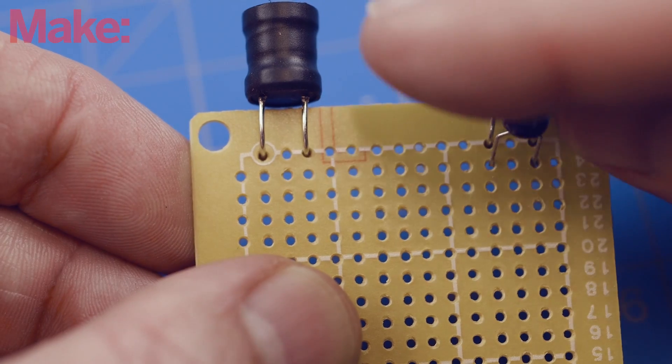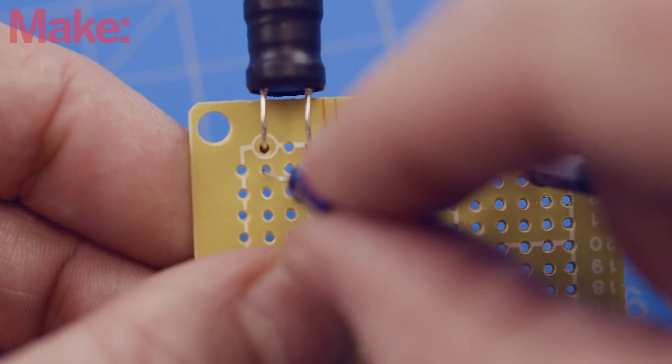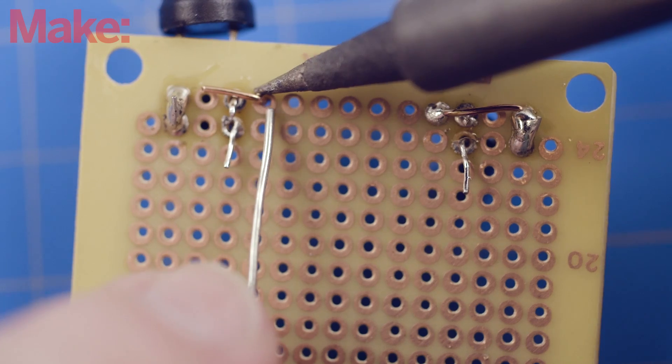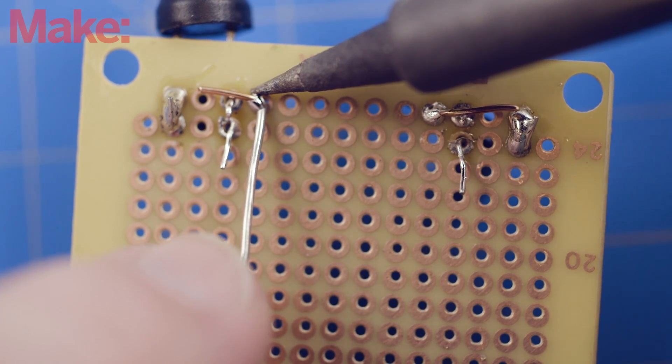Then, add the 2.2 microfarad capacitors to the inductors. These are going to determine the base cutoff frequency. Then bridge the contacts between the inductors as shown.